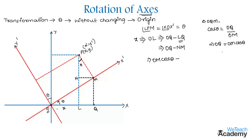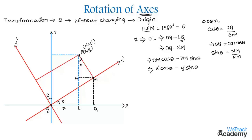By considering triangle PNM, sin theta equals the opposite side NM divided by the hypotenuse PM. So NM equals PN times sin theta. Therefore OM equals x-dash and PN equals y-dash, giving us x equals x-dash cos theta minus y-dash sin theta. This is the relation between x and the coordinates in the new system.